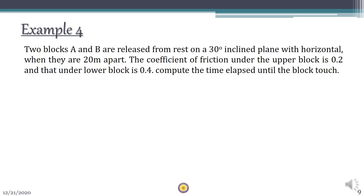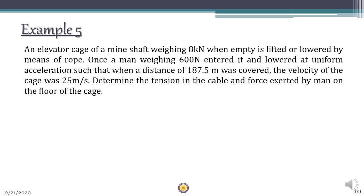Another assignment example also involves connected body motion on an inclined surface. Here the distance between the two bodies is given, so S is known and acceleration A is unknown. Once the acceleration is obtained, find the time required for both bodies to touch each other. An additional elevator problem is also included. Go through the assignments and submit them.